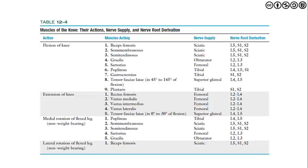Table 12-4 from McGee's sixth edition provides a helpful overview of the actions, nerve supply, and nerve root derivations for the muscles acting at the knee. We have the primary flexors of the knee in the posterior tract, the extensor of the knee which is our quadriceps as well as the tensor fasciae latae — which transitions from an extensor moment to a flexor moment as we get beyond 30 degrees of knee flexion. We also have medial rotation and lateral rotation of the flexed leg. The main three nerves supplying innervation are the sciatic nerve, the tibial nerve, and the femoral nerve, with some components of obturator and superior gluteal as well.